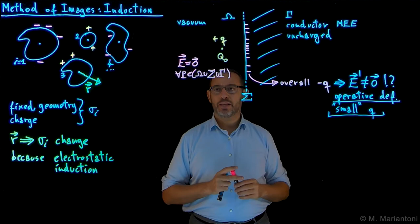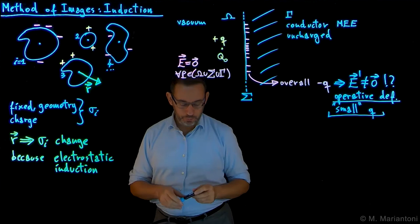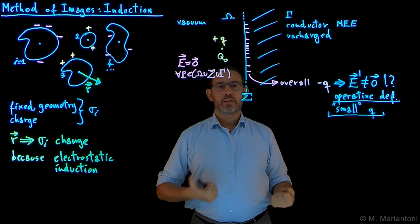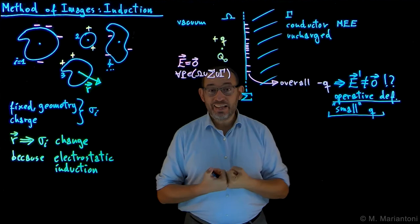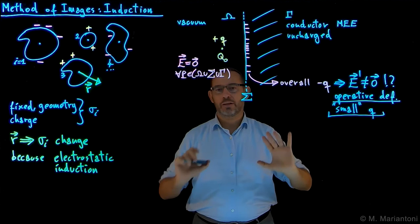This uncharged conductor scenario is really a limiting case — the worst case scenario. If I want to be a good experimentalist, I need to know how big is the impact of such a test charge on the experiment. We can follow a couple of different paths to figure out how big this impact is. Let's look at it in this limiting case of an uncharged conductor.